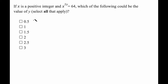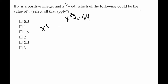Let's get to it. I'm going to rewrite it right here: x to the power of 2y is equal to 64. Let's start with 0.5. X to the power of 2 times 0.5 is the same thing as x to the power of 1. And if x to the power of 1 equals 64, well then x equals 64, and that is a positive integer, so 0.5 works.